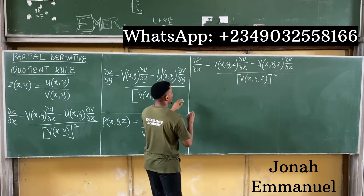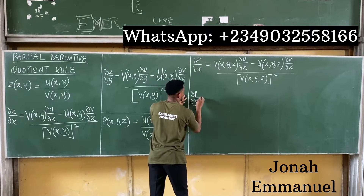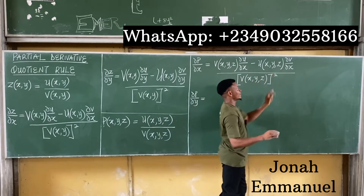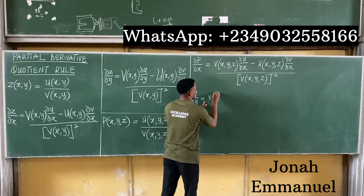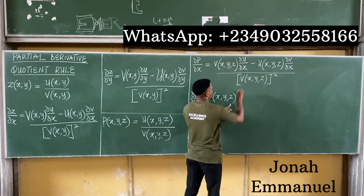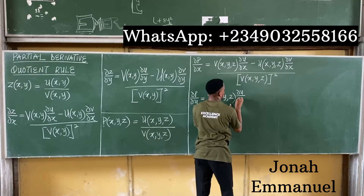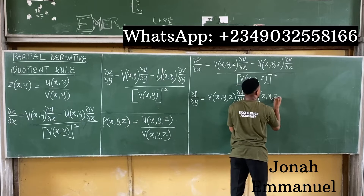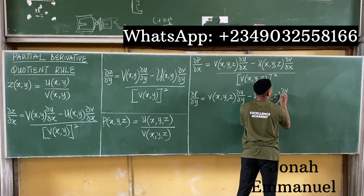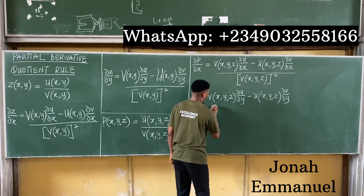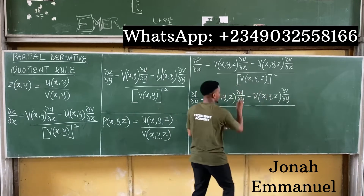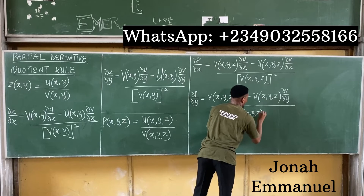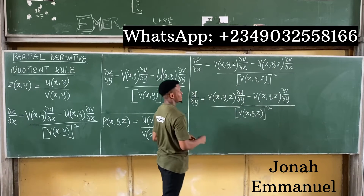For ∂p/∂y, the formula is exactly the same, just changing x to y. So it becomes v(x,y,z) times ∂u/∂y, minus u(x,y,z) times ∂v/∂y, all over v(x,y,z) squared.